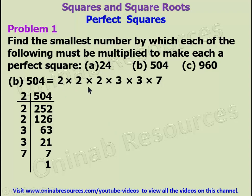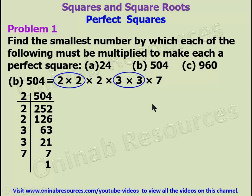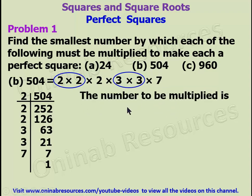Again, we group the same numbers into pairs. The first two 2s are grouped, but the third 2 is left unpaired. The two 3s are grouped together. But 7 cannot be grouped with any other 7. Therefore, the number to be multiplied is 2 times 7, which gives 14. So the number to be multiplied by 504 to make it a perfect square is 14.